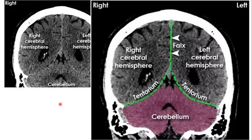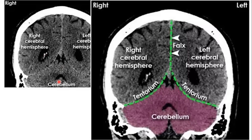On coronal reconstructed images, we can see the right and left cerebral hemispheres with the tentorium cerebelli separating the cerebrum from the cerebellum. At the attachment site of the falx cerebri to the midline, there is a whitish structure representing the superior sagittal sinus, where venous blood drained from the brain collects at the root of the falx cerebri.